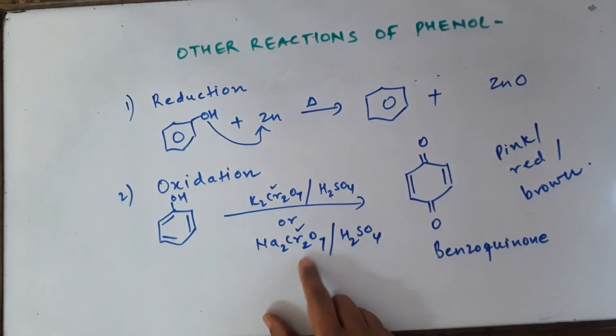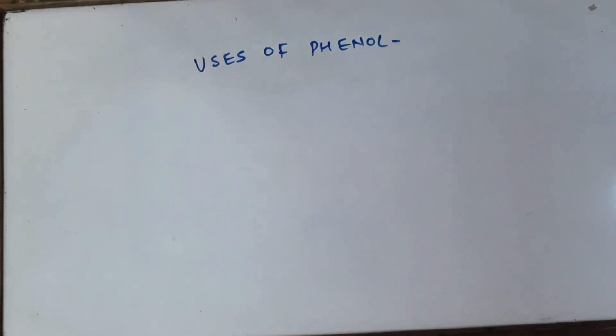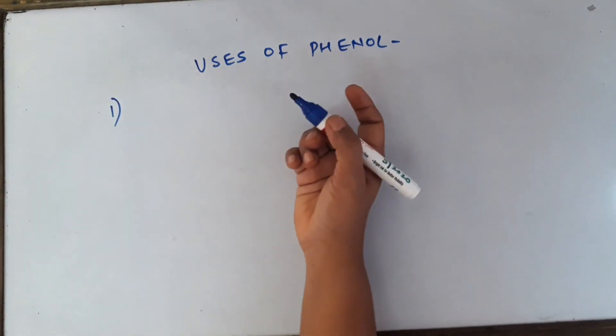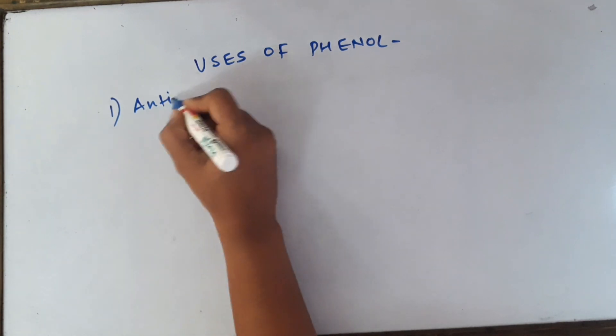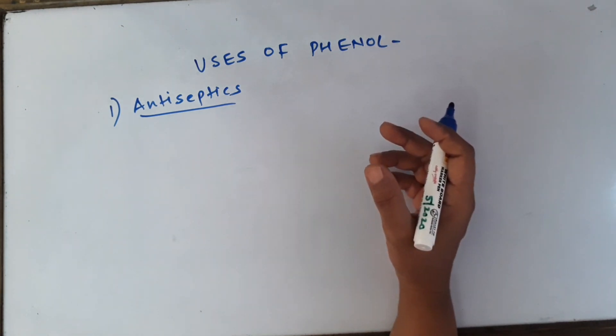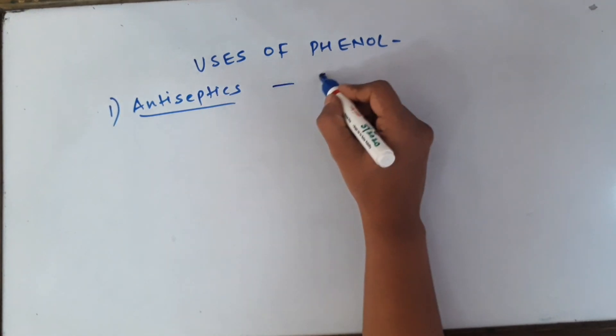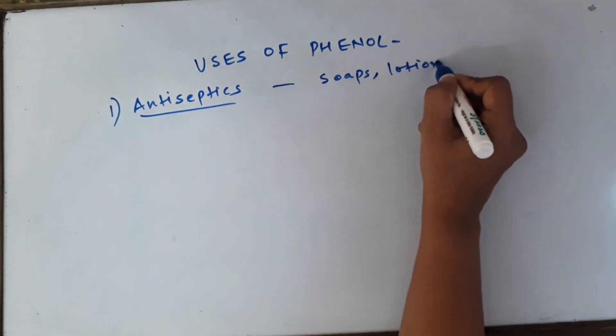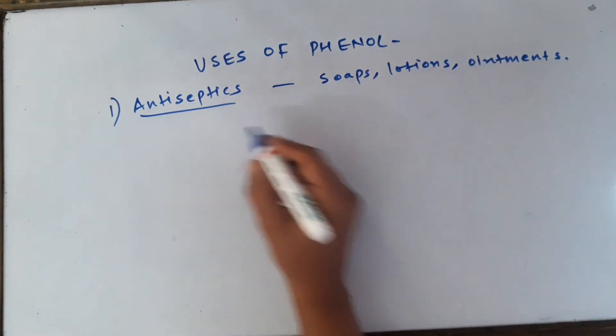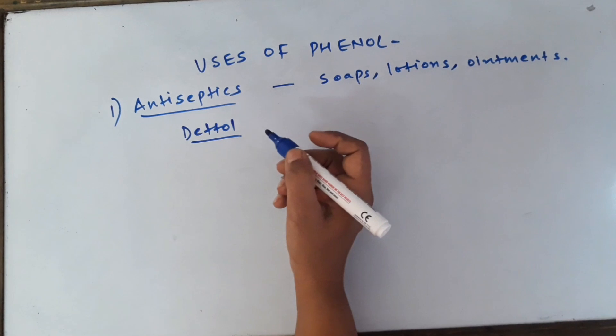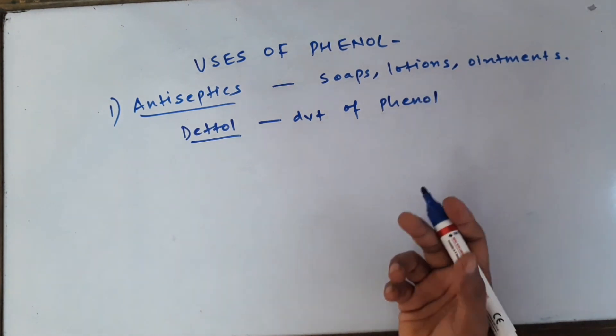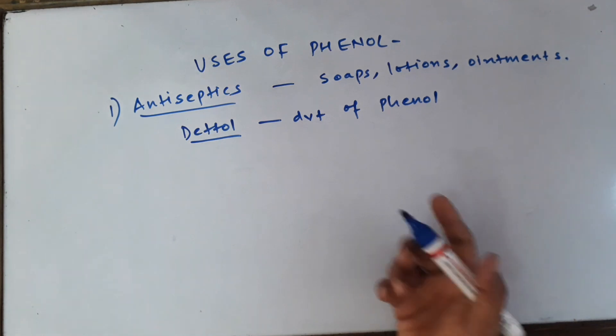This question had been asked in the board exam also. Now I am talking about uses of phenol which can be there in exam and also as general knowledge every child must know why am I studying this topic of phenol. First of all, let me tell you that phenols are very good antiseptics. They are used to kill the bacteria or the germs which are present on the live wounds. They can be used in soaps, they can be also found in lotions, or you can also see them in various ointments which we are using daily. A very familiar and common antiseptic which we use is Dettol. Dettol is nothing but a derivative of phenol. It contains derivatives of phenol and it is quite a good antiseptic.